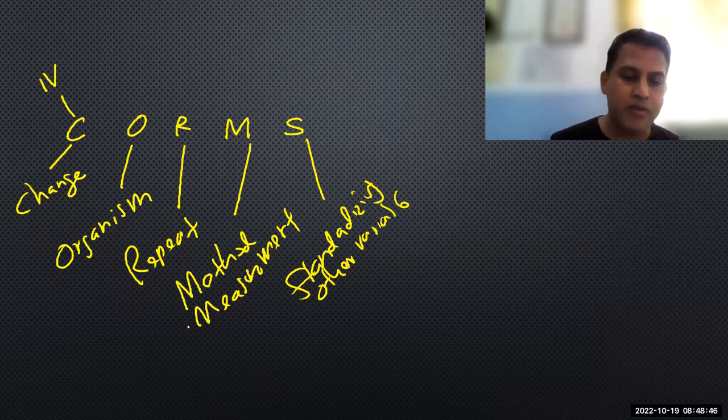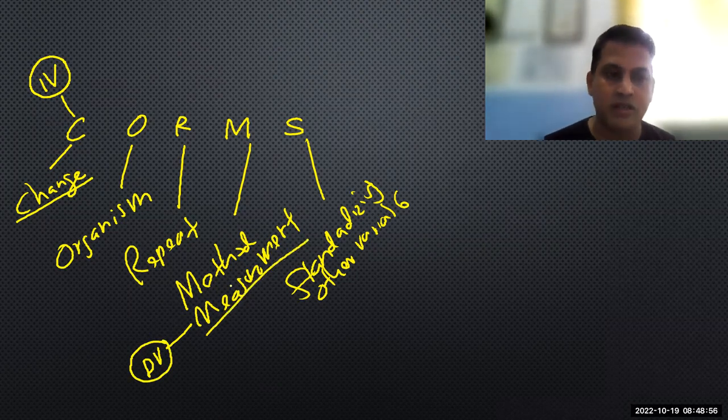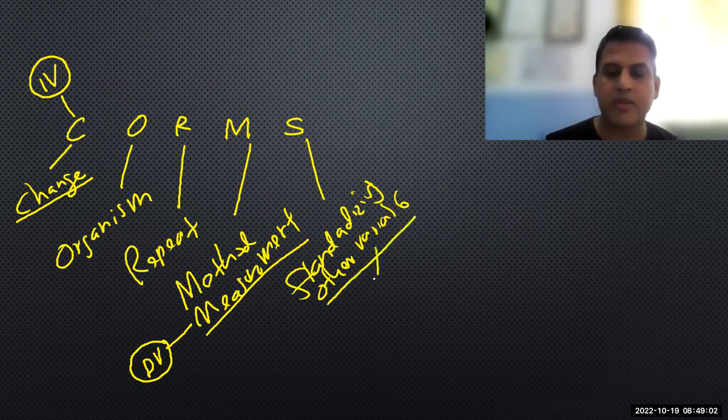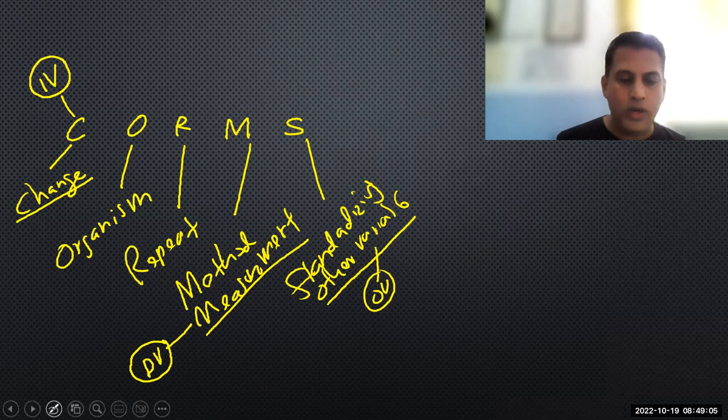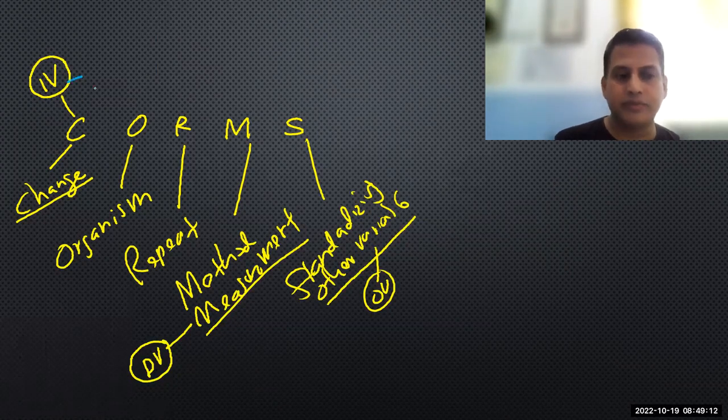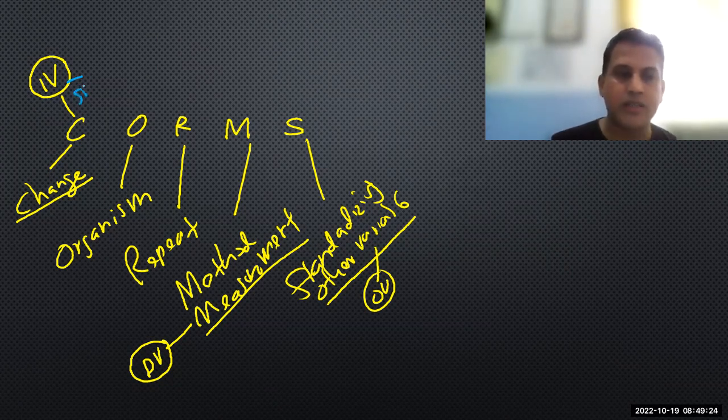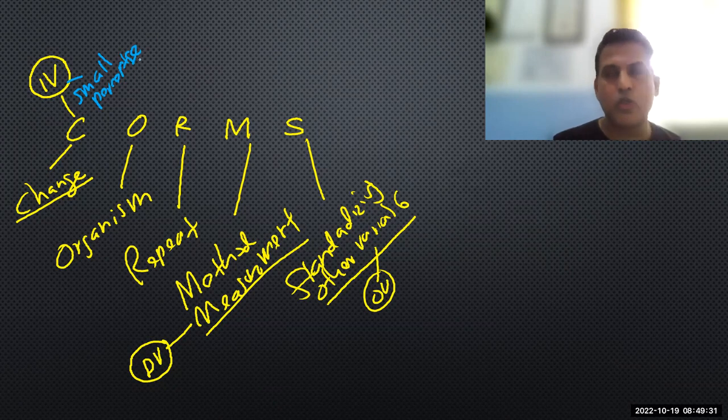What we measure is the dependent variable. So in an experiment we have independent variable (what we change), dependent variable (what we measure), and rest of the variables we keep constant—these are other variables. Now we look where we can improve. These are the places we can check: independent variable. The independent variable has a quite good range, so it's fine.